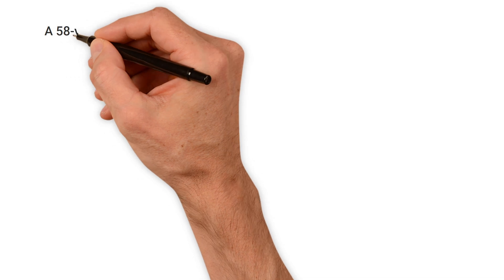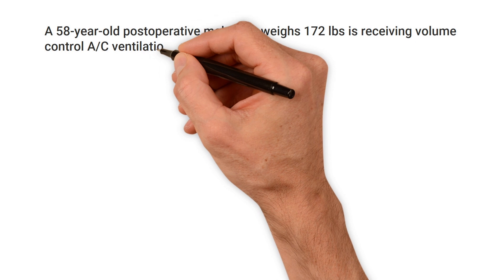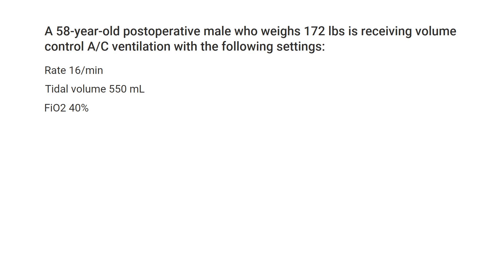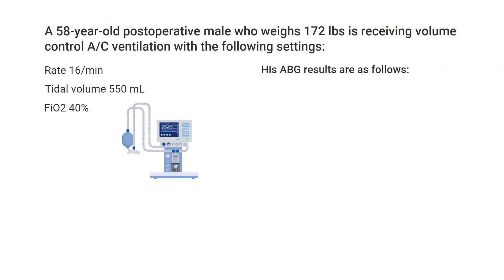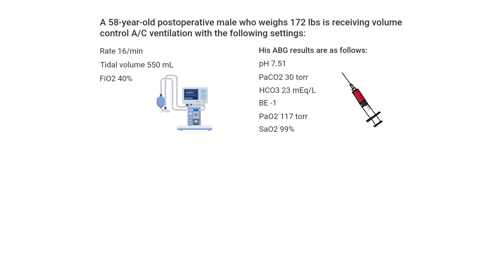A 58-year-old post-operative male who weighs 172 pounds is receiving volume control assist-control ventilation with the following settings: rate of 16 breaths per minute, tidal volume of 550 milliliters, and FiO2 of 40 percent. His ABG results are as follows: pH of 7.51, PaCO2 of 30, bicarb of 23, base excess of negative 1.